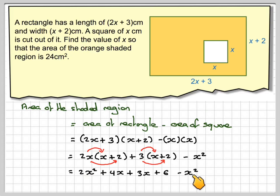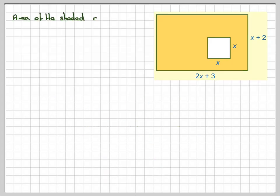2x squared minus x squared just gives me 1x squared, and then 4x plus 3x gives me 7x, and then we've still got the plus 6. So the area of the shaded region is going to be x squared plus 7x plus 6. And we know that to be equal to 24 because it's given in the question. So we now need to solve this equation.